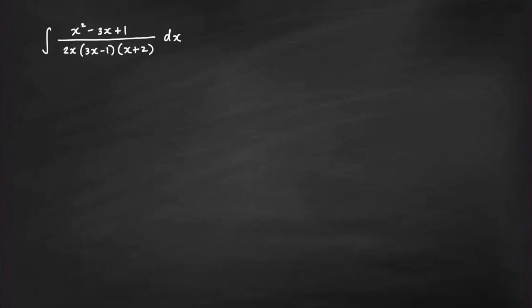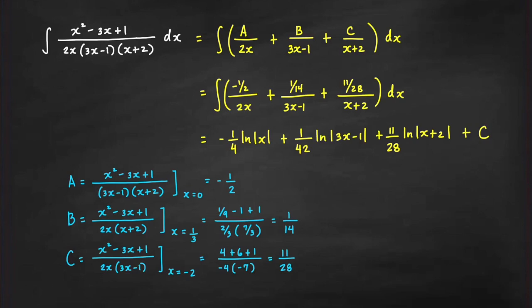This is a proper rational function. We write the partial fraction decomposition as a constant over 2x plus another constant over 3x minus 1 plus a constant c over x plus 2. To find a — the numerator of the fraction with denominator 2x — we cover the 2x in our integrand and plug in x equals 0, giving us 1 over negative 1 times 2, which is negative 1 half.